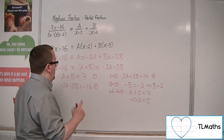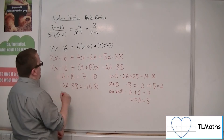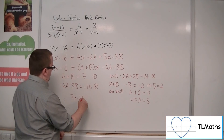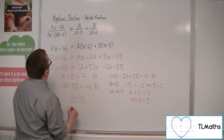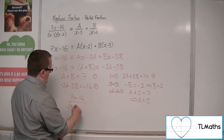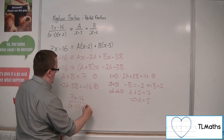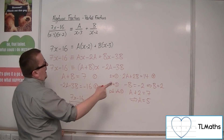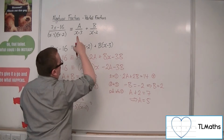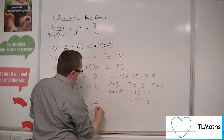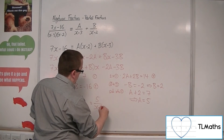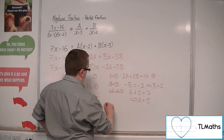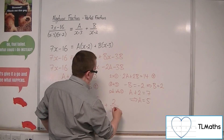We can now finish off by writing that 7x minus 16 over x minus 3 times x minus 2 equals 5 over x minus 3 plus 2 over x minus 2.